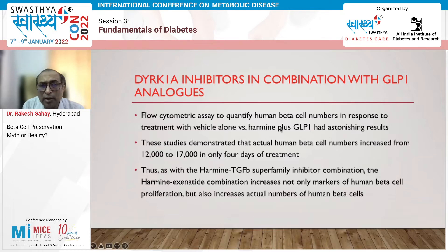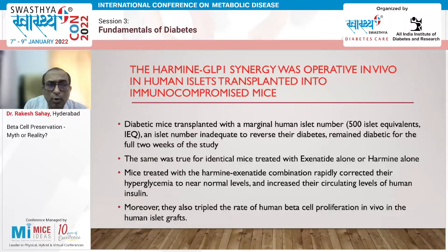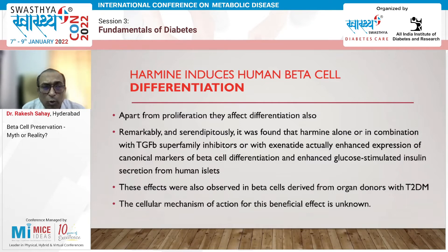DYRK1A inhibitors combined with GLP-1 analogues have been shown to improve beta cell function, and the number of beta cells has also been shown to increase in vitro studies. With only four days of treatment, there was a significant increase in the number of beta cells. When put in vivo into human islets transplanted into immunocompromised mice, improvement in beta cell numbers was again seen.